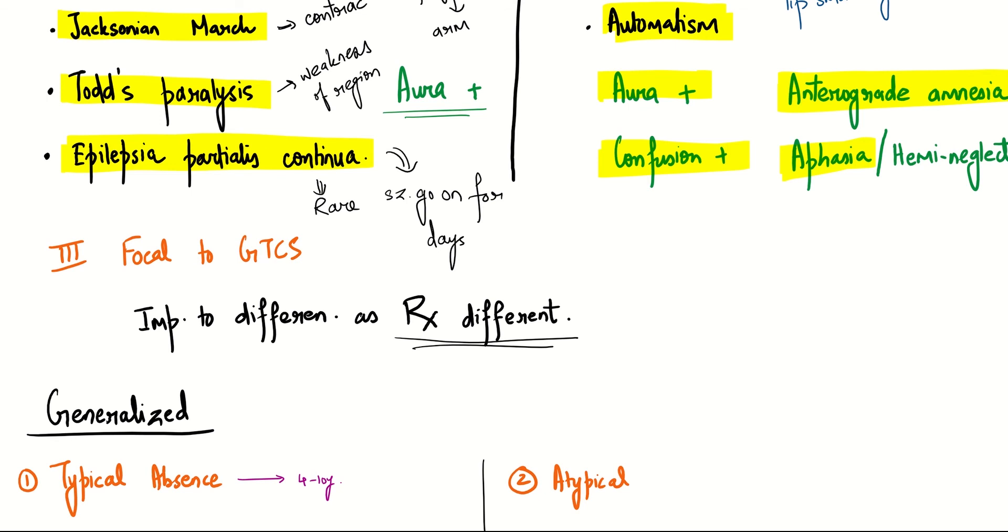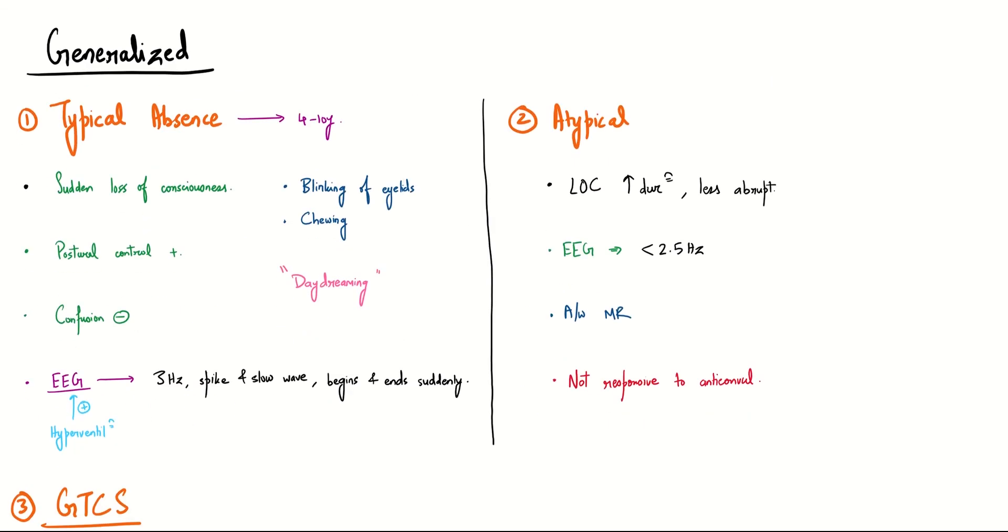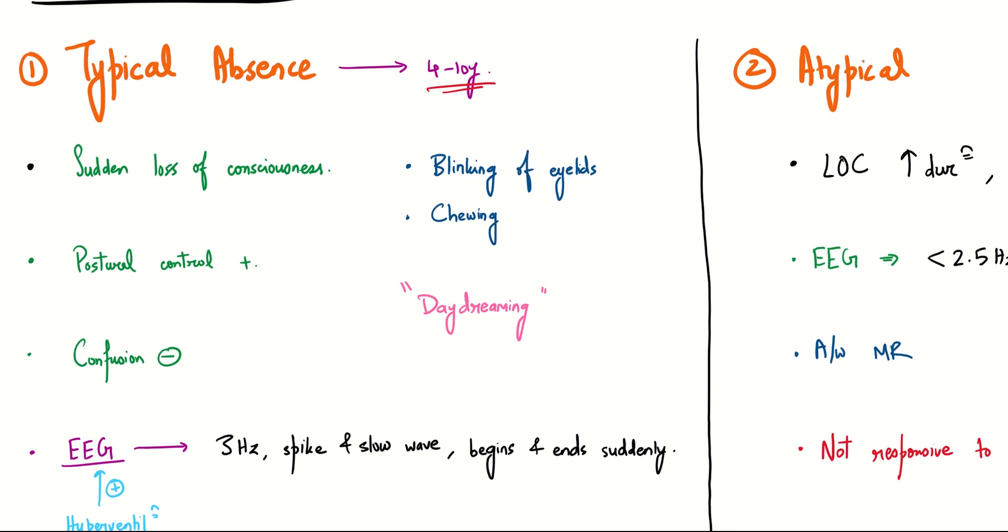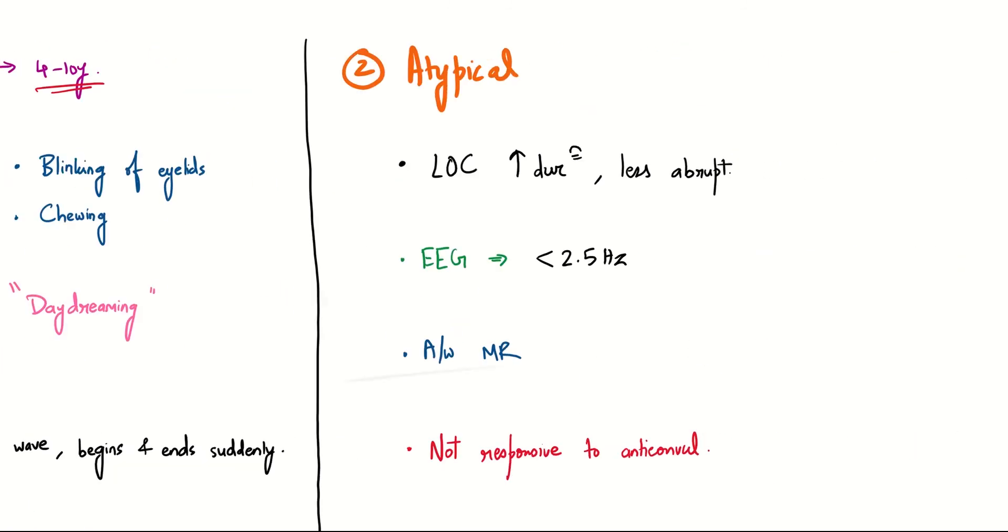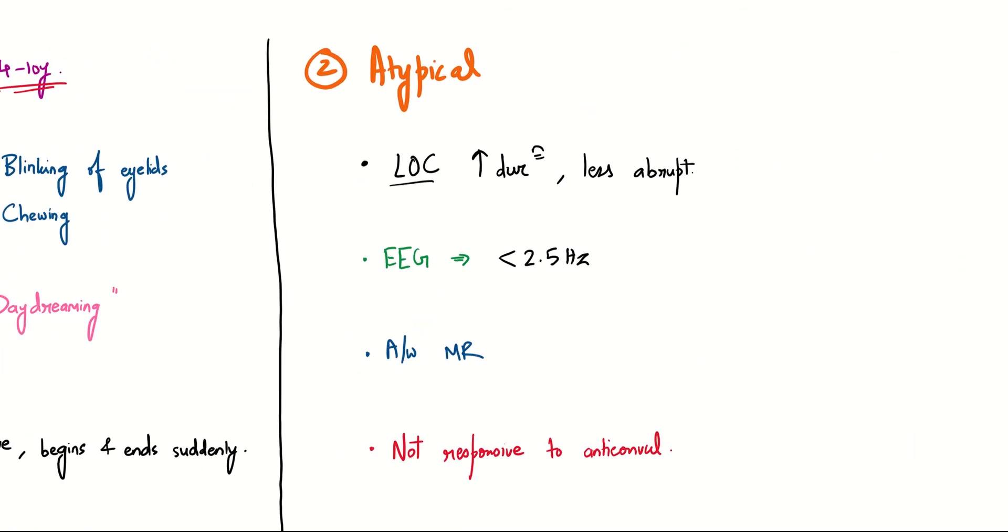Let's move on to generalized seizure. First, we have typical absence seizure, which is seen in 4 to 10 year olds. Here we see a sudden loss of consciousness, which is not the case in atypical absence where the loss of consciousness is less abrupt.